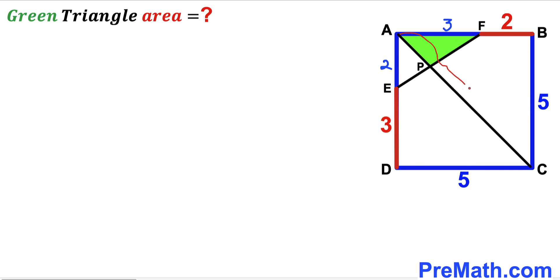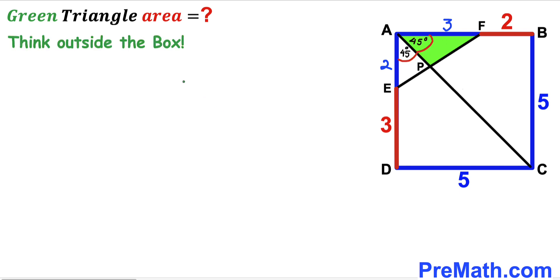Now let's make an observation. We know that AC is the diagonal of this blue square, so this angle has got to be 45 degrees, and likewise this angle is going to be 45 degrees as well.